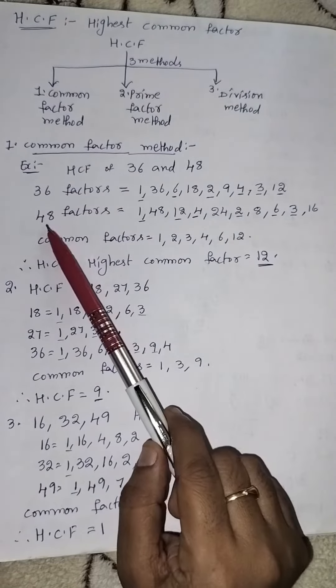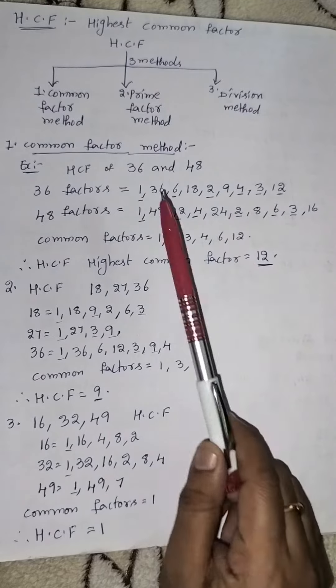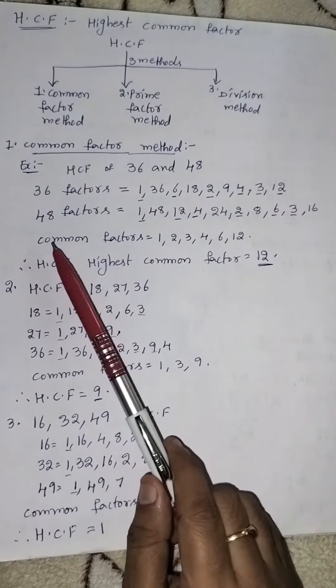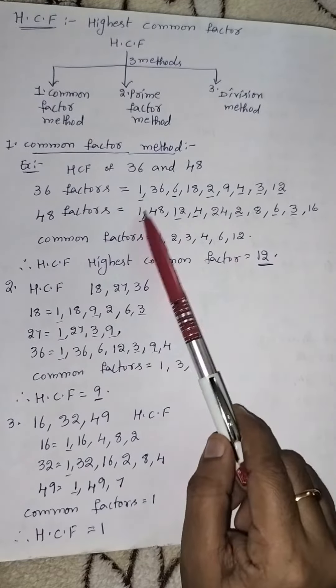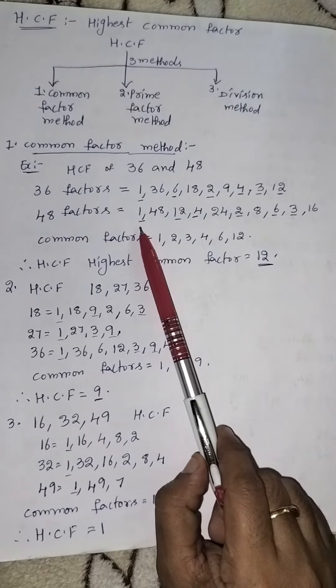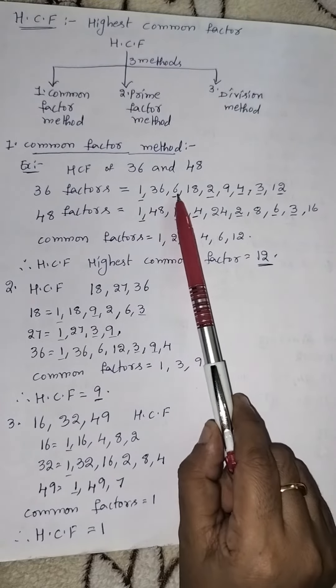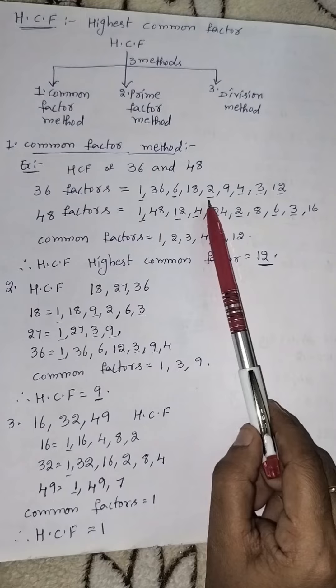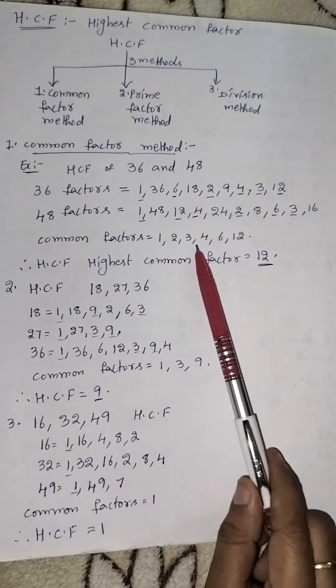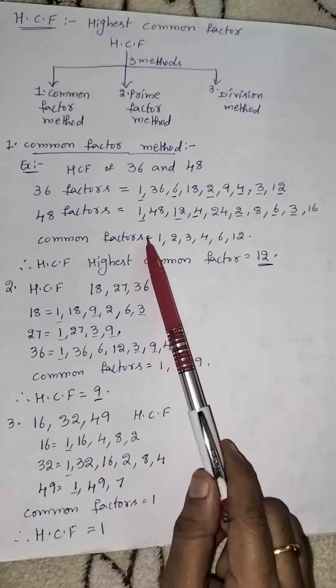We write the factors and after then we write common factor. In these numbers common factors are 1, 12, 6, 2, 4, 3. So 1, 2, 3, 4, 6, 12 are the common factors.